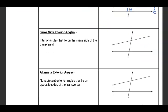Same-side interior angles are angles that lie on the same side of the transversal. From angles 3, 4, 5, 6, we would say angles 4 and 5, and angle 3 and angle 6.